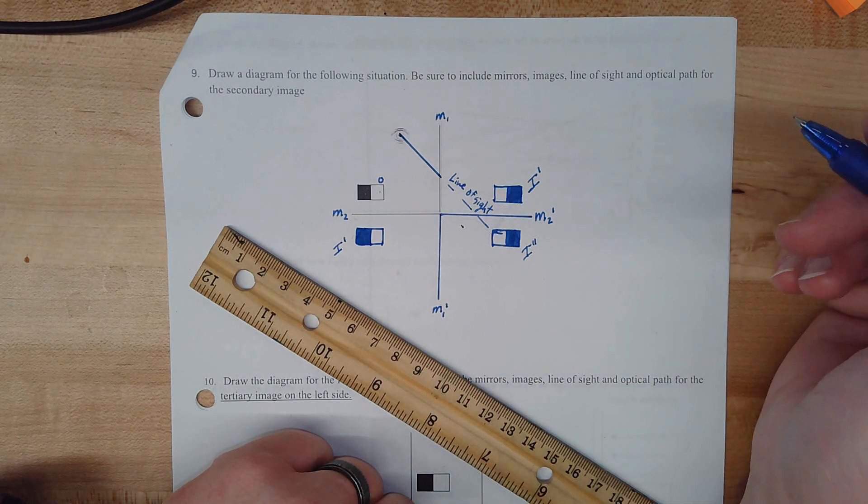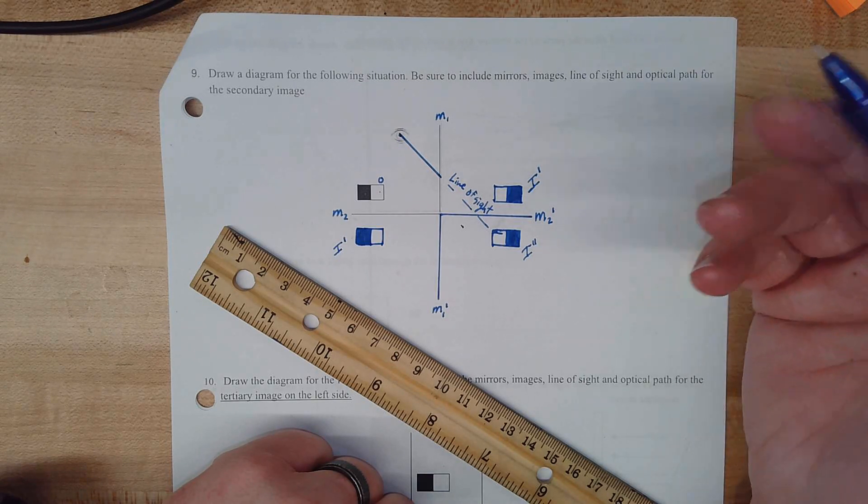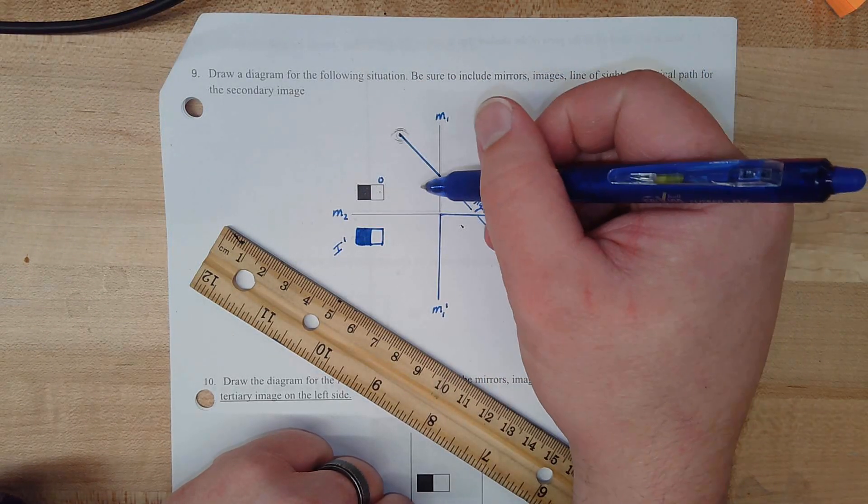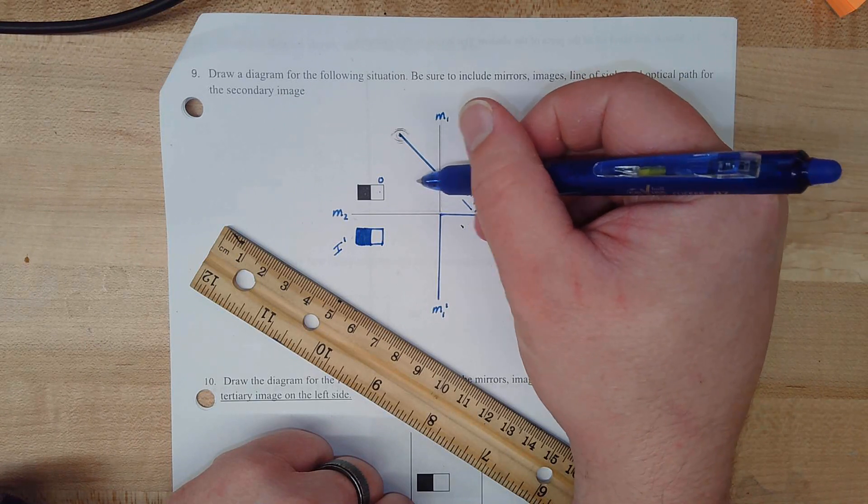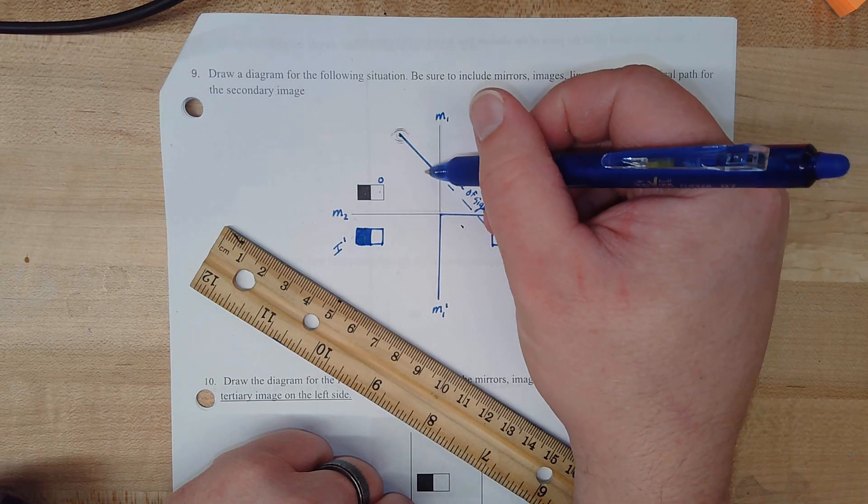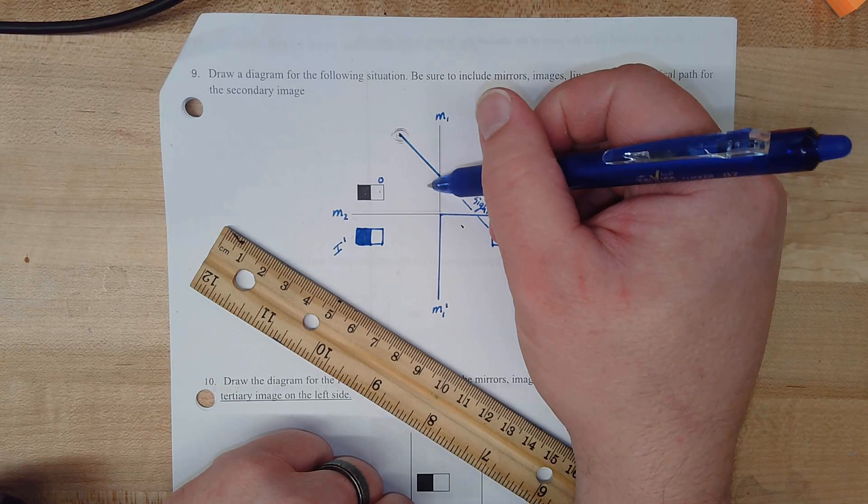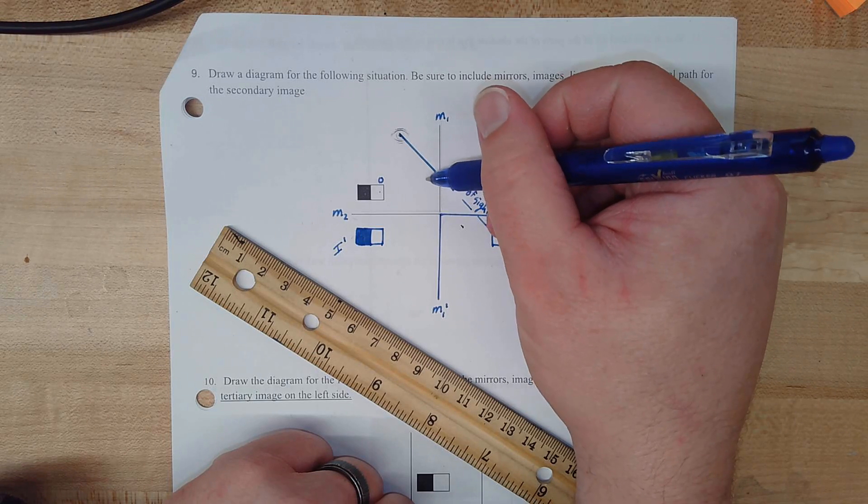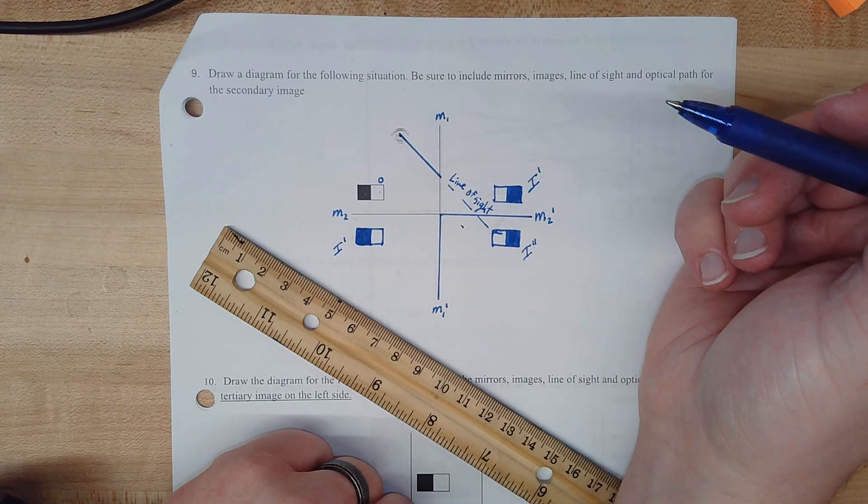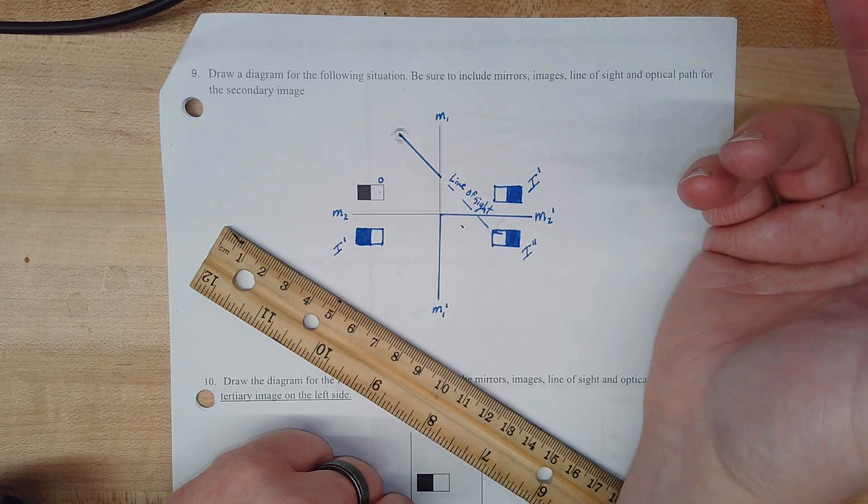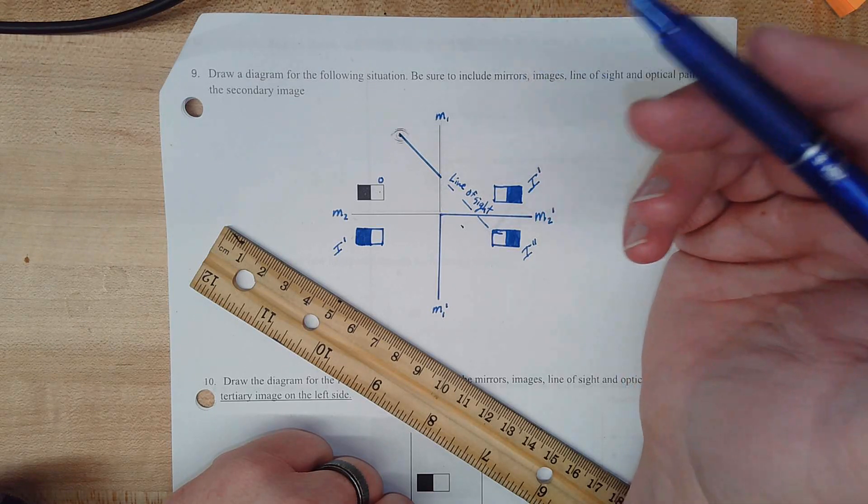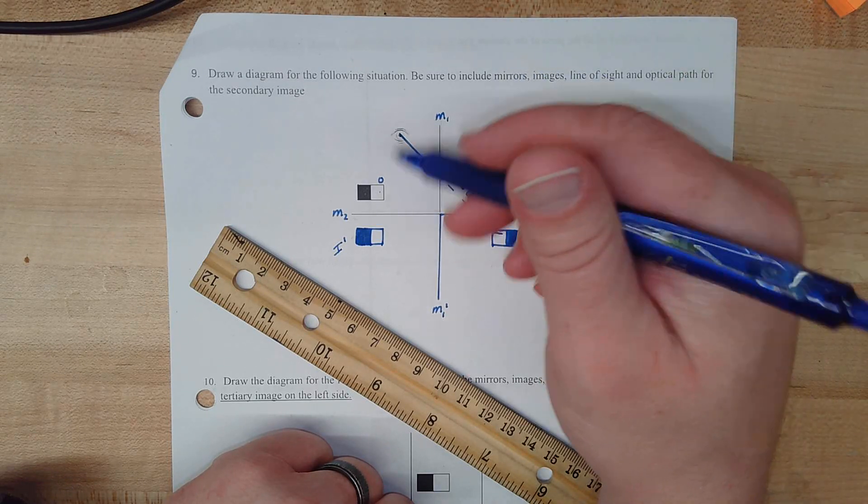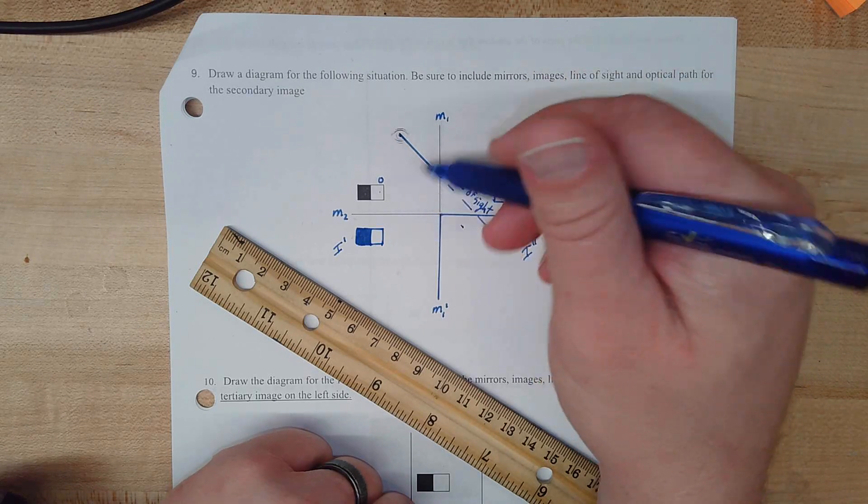Now, the next step is we need to apply the law of reflection at each of these intersections. Remember, that law of reflection says that the angle that light hits at is equal to the angle light bounces off at. Now, we could get out measuring devices and measure the angles and replicate them carefully on the other side.